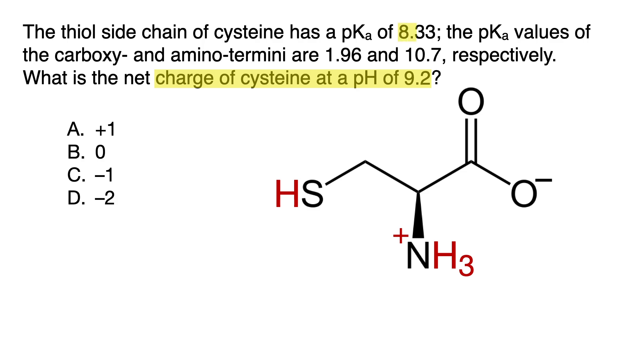And now 9.2 is higher than the pKa of the side chain, which means the side chain thiol will have been deprotonated at a pH of 8.3, leaving a negative charge on the sulfur. But 9.2 still is less than the pKa of the amino terminus, which means the amine will still be protonated and positively charged at a pH of only 9.2.